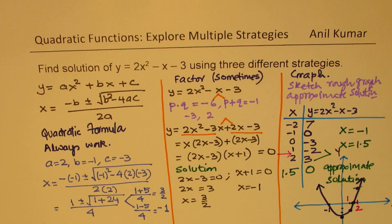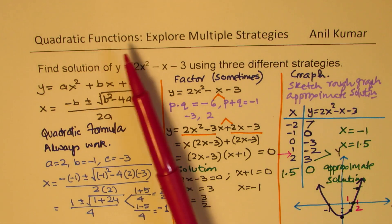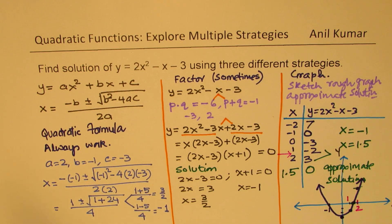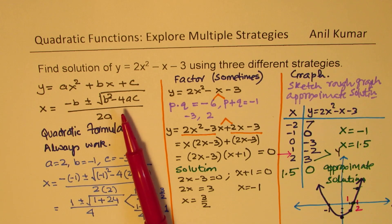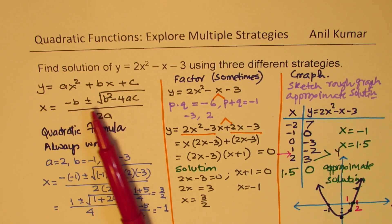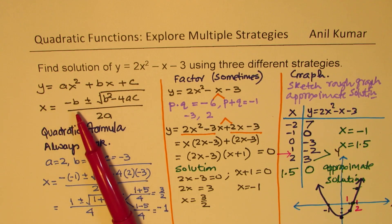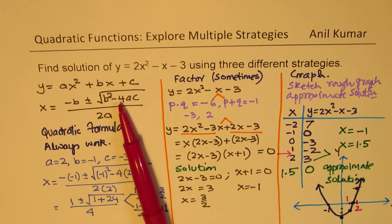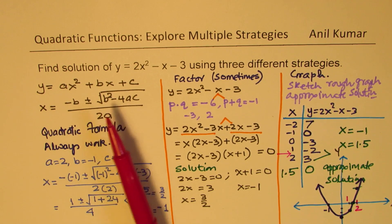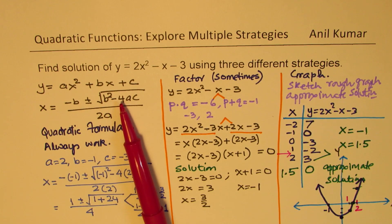So from this particular video, we learned that there are many techniques to find solution to a quadratic function. Quadratic formula provides us with a solution for sure. We will get two values. Both can be same. Both could be imaginary. Both could be real, depending on b squared minus 4ac.